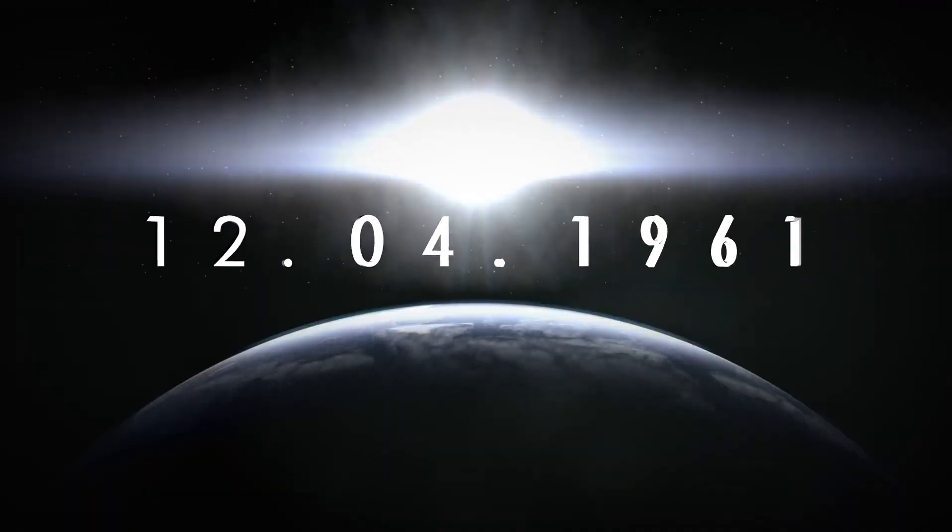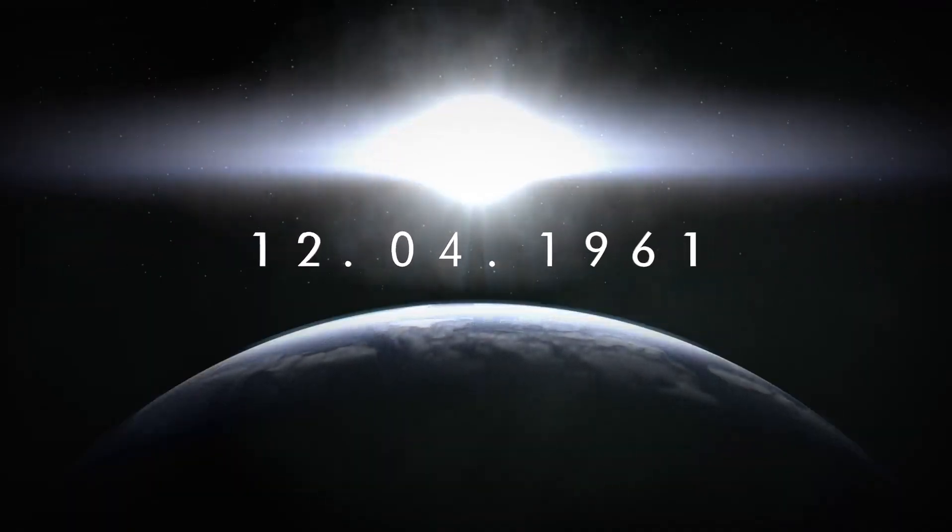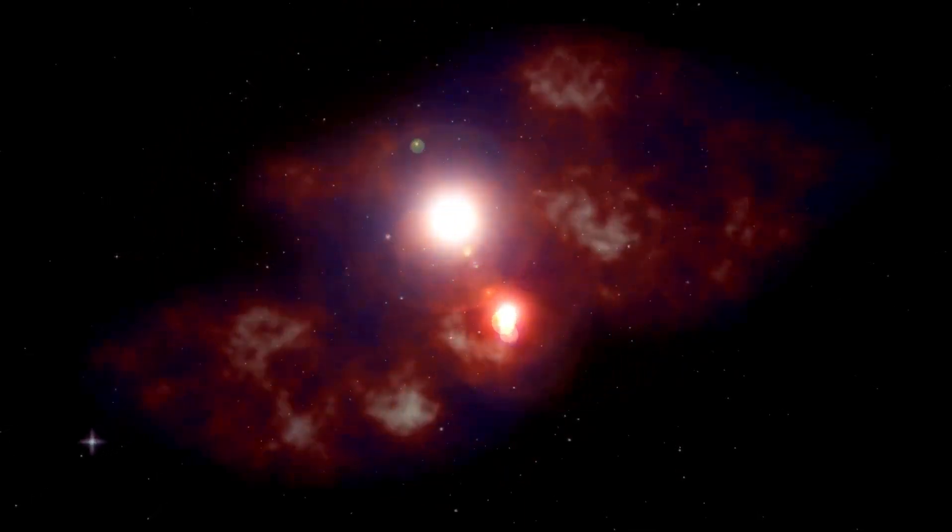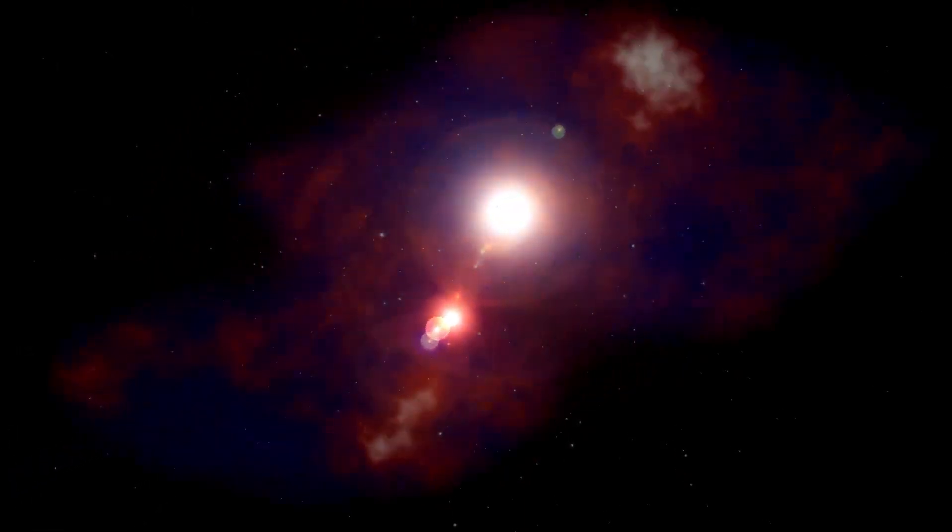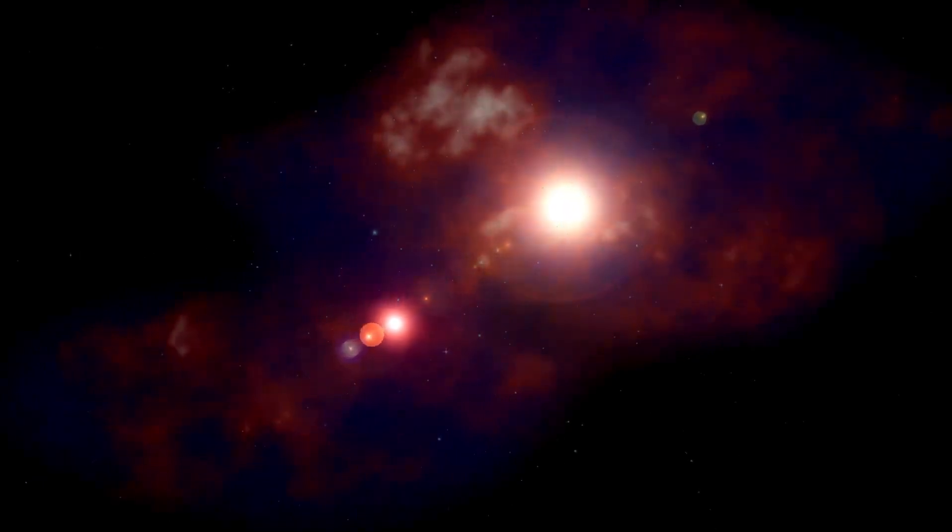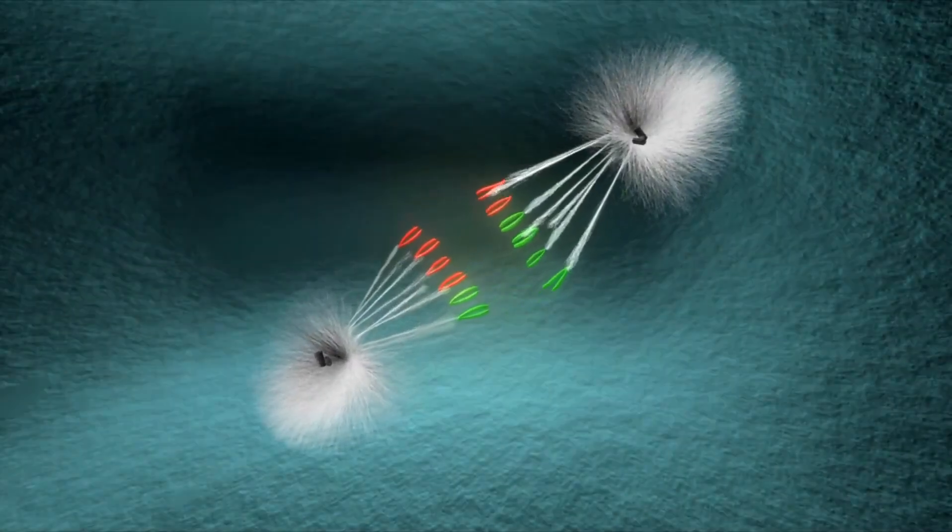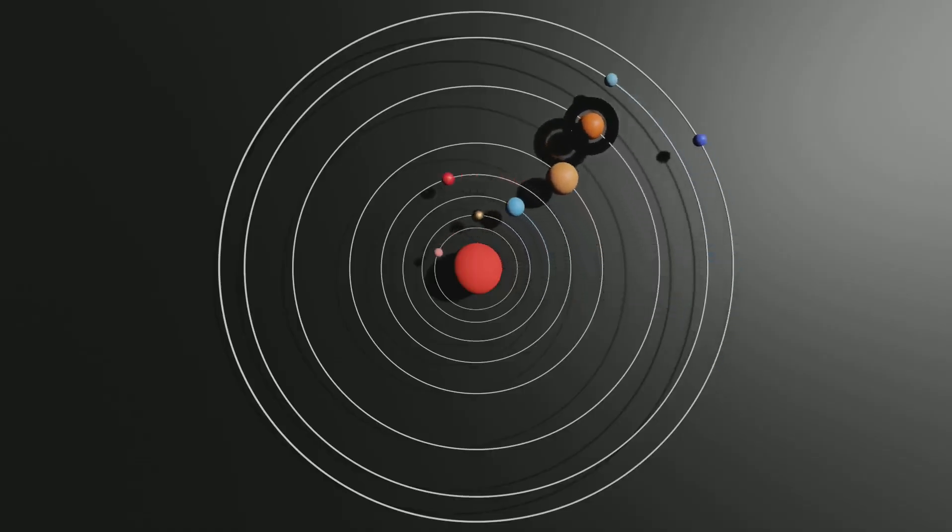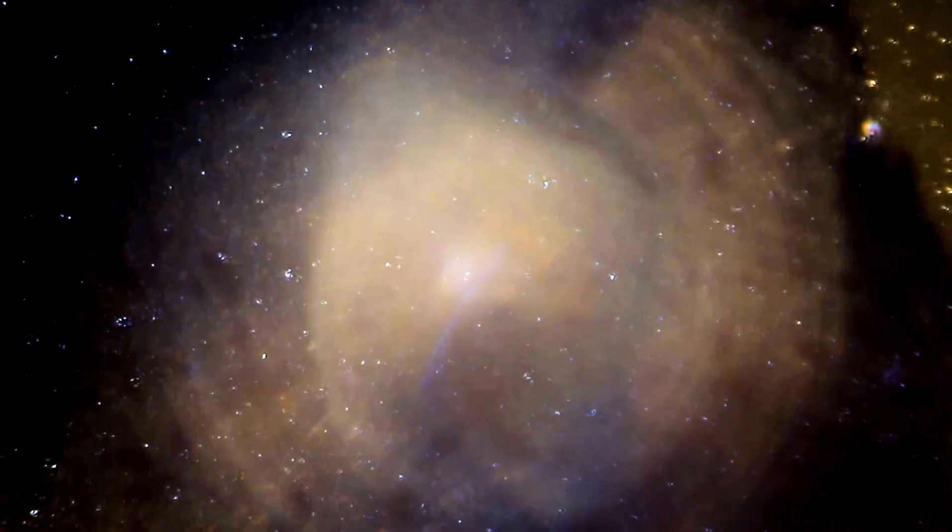The first direct image of an exoplanet was captured in September of last year. This planet, identified in 2017 and named HIP 65426b, was observed using the Webb Telescope's coronagraphs, which block out the overwhelming light from the host star. The planet is a massive gas giant, nearly 12 times the size of Jupiter, orbiting its star at a distance 100 times greater than that between Earth and the Sun.